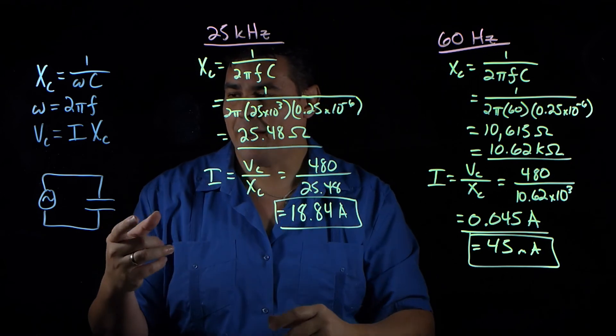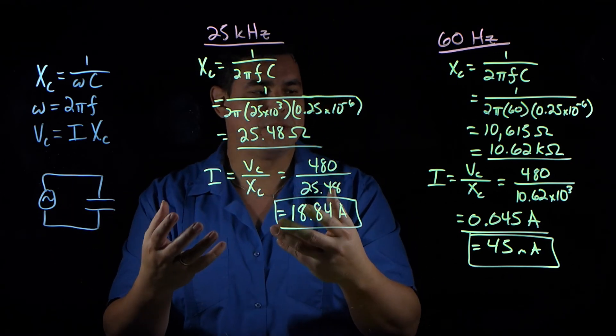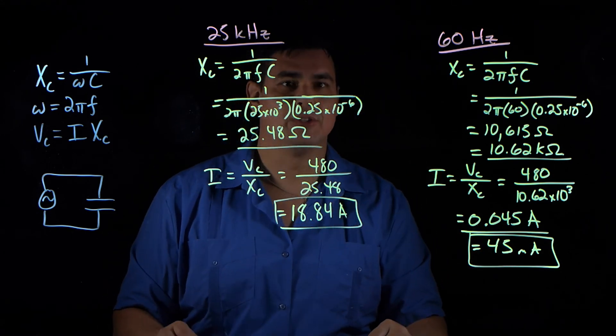So this is why if you use capacitors in AC circuits, you can use them to let high frequencies pass but stop low frequencies. That's the whole point of like a high pass filter or something like that.